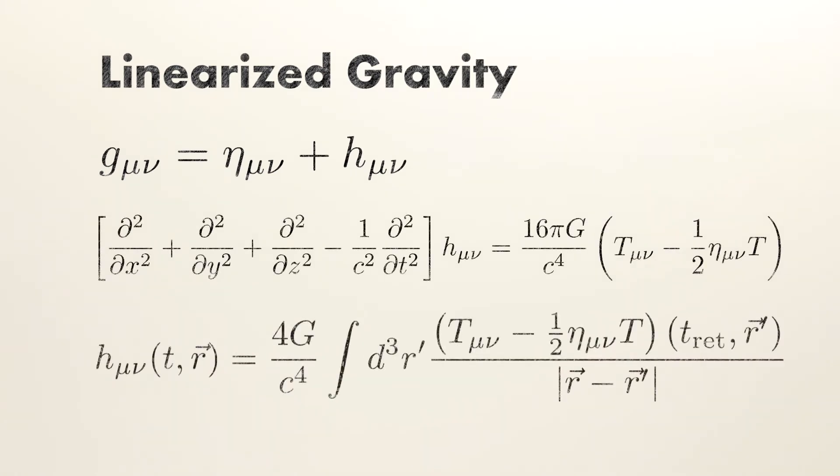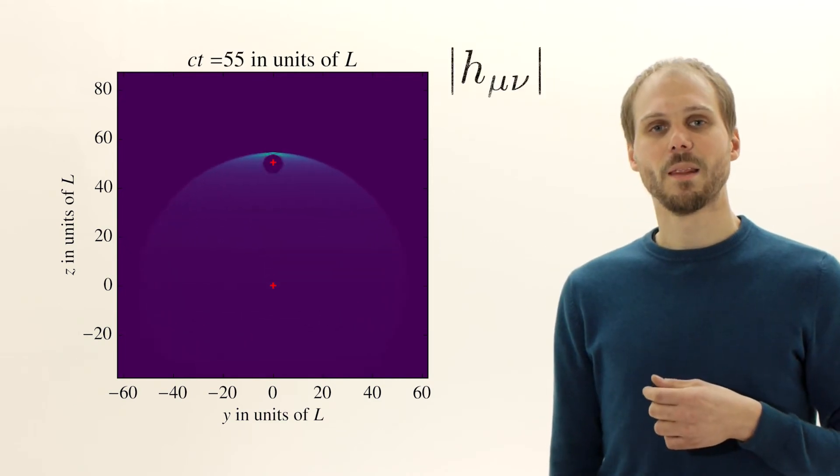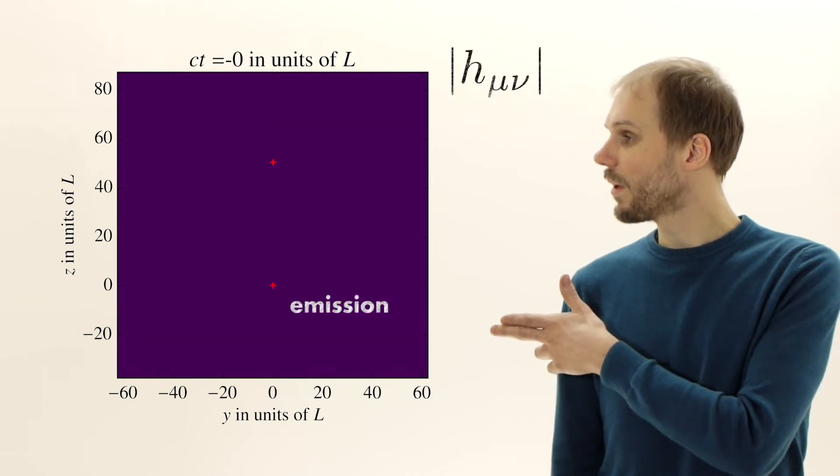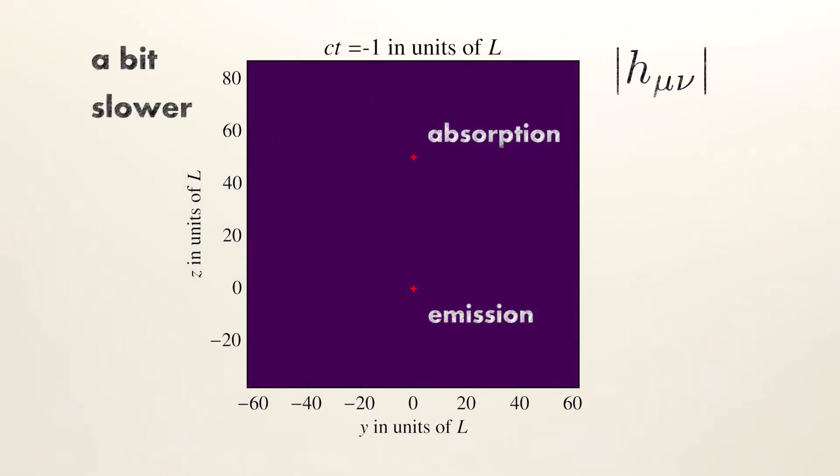In the laboratory frame, the non-zero components of the resulting metric perturbation only differ by sign. Here we see a video of the evolution of the absolute value. The video starts shortly before the pulse emission and ends shortly after its absorption. In the dark purple regions, the metric perturbation vanishes.